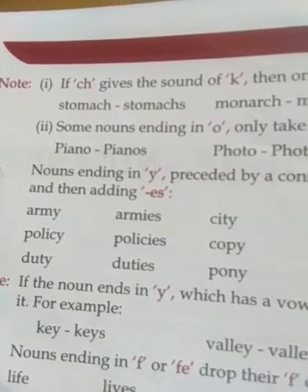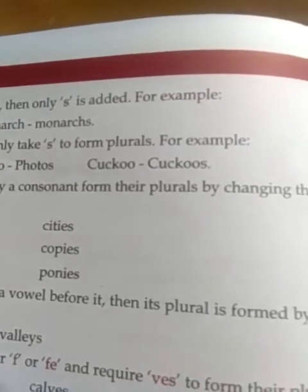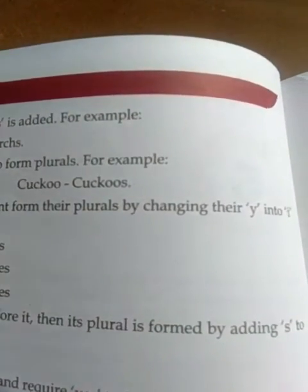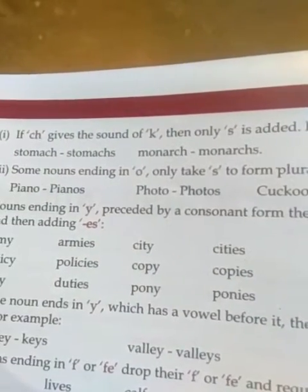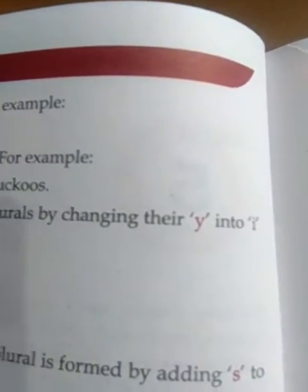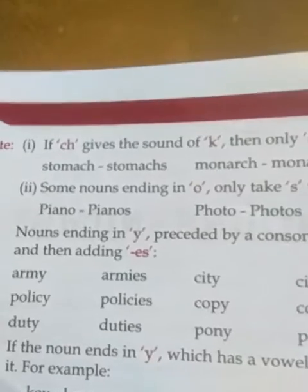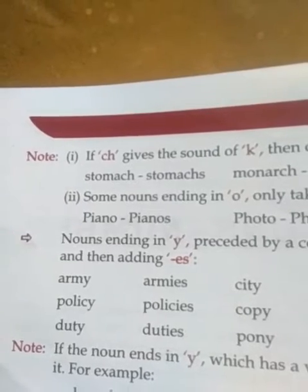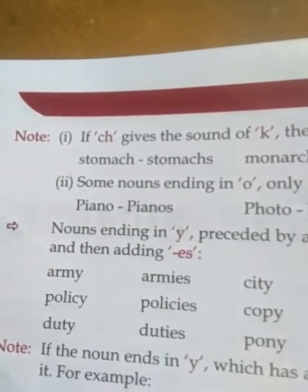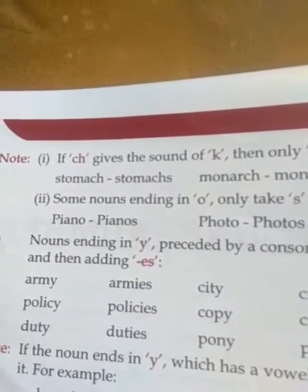Nouns ending in 'y' preceded by a consonant form their plurals by changing 'y' into 'i' and then adding 'es'. So if before 'y' there is a consonant, 'y' will change into 'i'. For example, 'army' — before 'y' there is 'm', which is a consonant, so 'y' changes to 'i' and 'es' is added: army → armies.